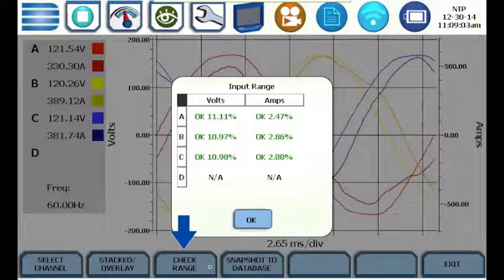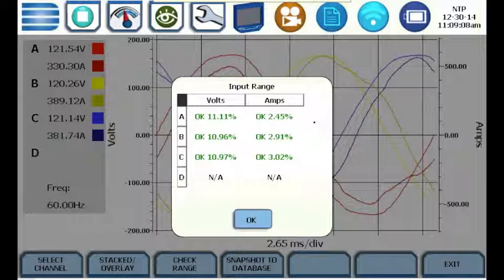Press the Check Range button to confirm that the measurements are within the measurement range of the instrument. If everything's okay, they'll be displayed in green. If anything's out of range, it'll be displayed in red.